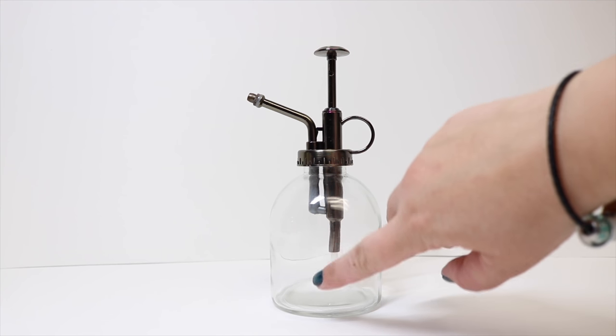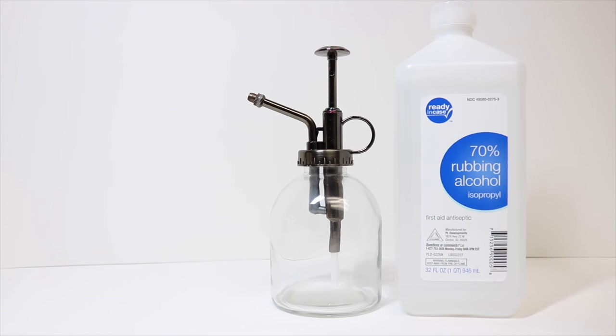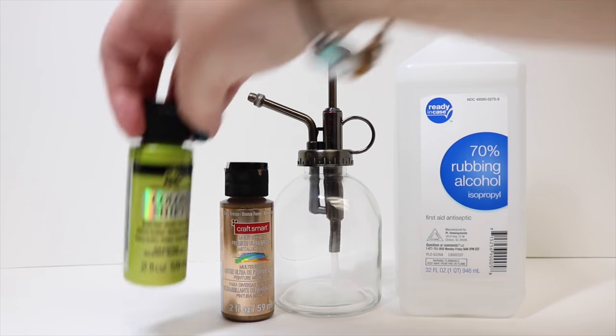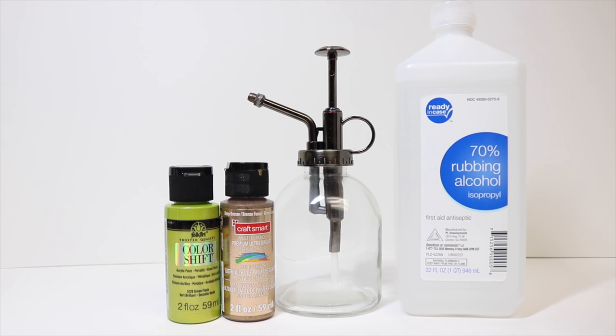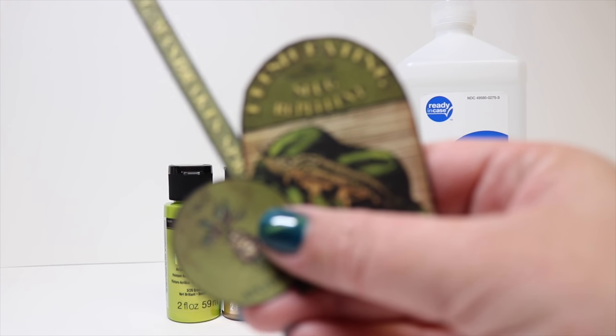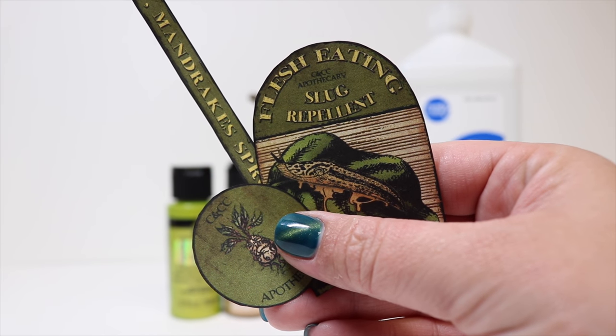I wanted one that didn't have any texture. A lot of times they'll have ones with ridges or things like that, so if you can try to get a smooth one. We will need some rubbing alcohol to make the flesh-eating slug repellent solution on the inside. We will also need some brown and green metallic acrylic paint. Make sure that it's metallic because the mica that's in there is what we want to create a swirling effect. We will need our labels printed on sticker paper, and the link for these is in the description down below.